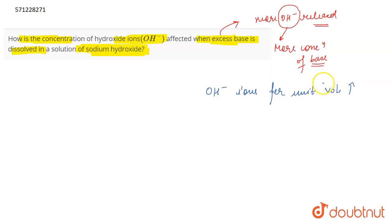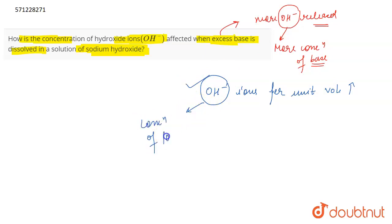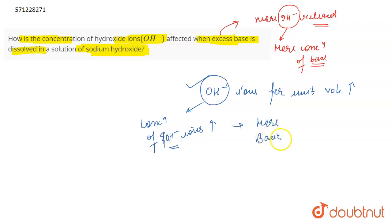In a given volume of solution, if you are increasing the amount of base, it means that you are increasing the amount of OH⁻ ions. As the amount of OH⁻ ions increases, the concentration is increasing. The concentration of OH⁻ ions is going to increase, which means that the solution has become more basic.